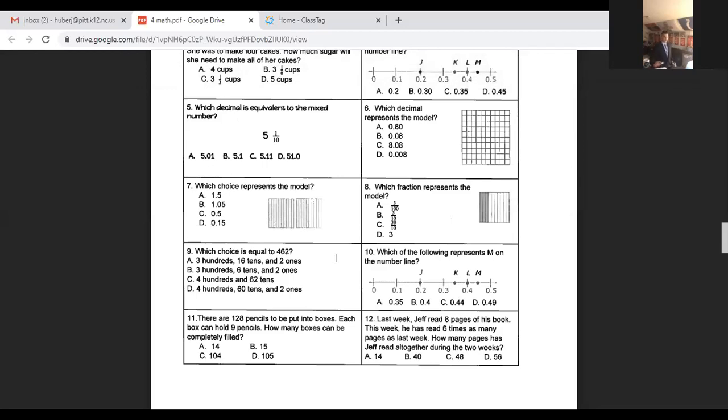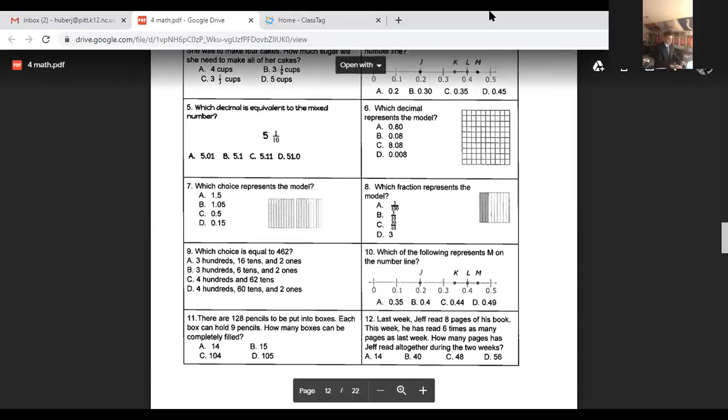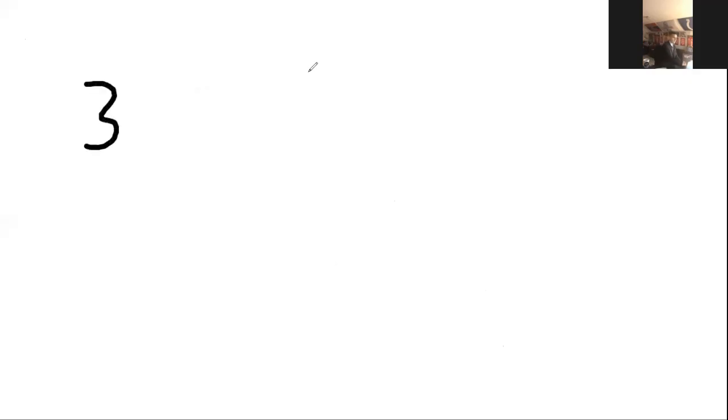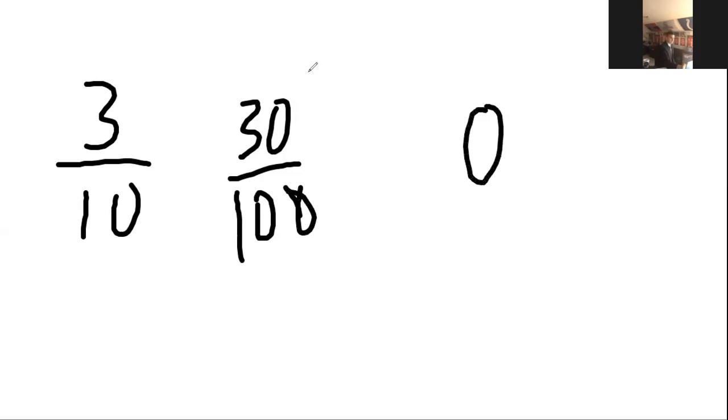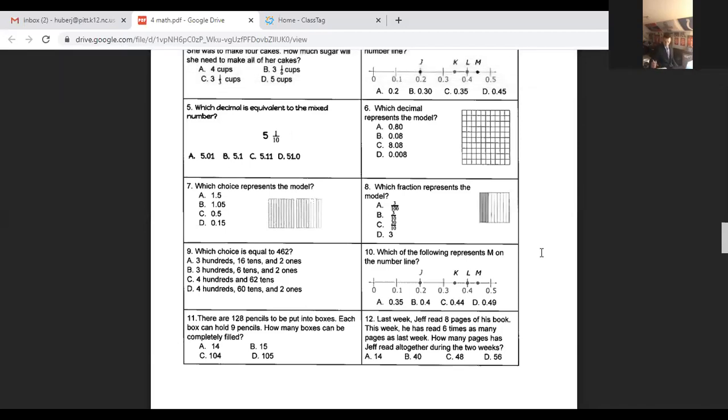You could have changed it to a mixed number and gotten one and five-tenths, which takes me back to where we just were originally, and then I could write that as a decimal. So number seven, you should have had A. Number eight, not a whole lot of a challenge here. It says, which fraction represents the model? Well, guys, you know we're in tenths. You just got to look at how many are shaded. There's three shaded. Three-tenths is your answer, and that choice is B. Not much to do there, so let me give you a little bit to do. I would like for you to write this somewhere three other ways. You could also write that in hundredths as a fraction, thirty hundredths. And then you could take both of those fractions, write them as decimals, three-tenths, thirty hundredths.